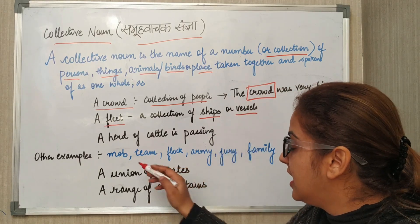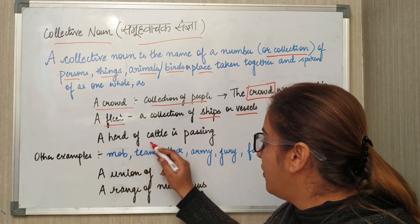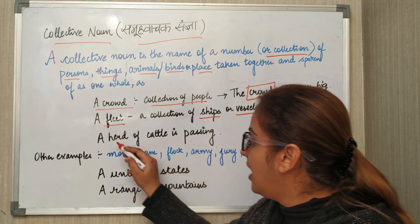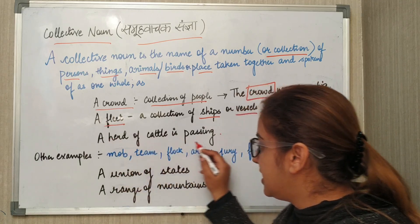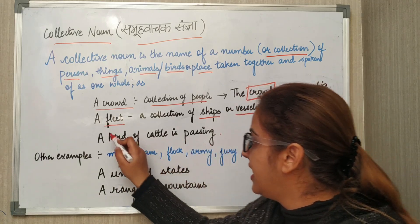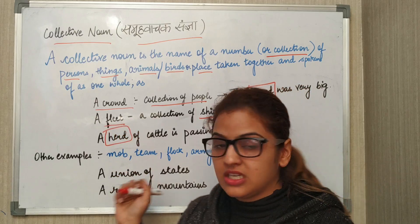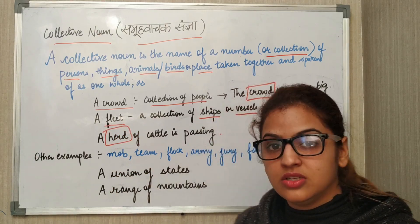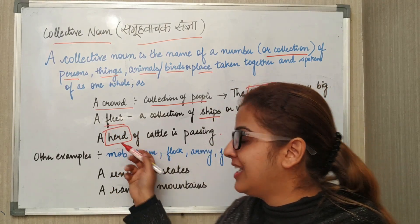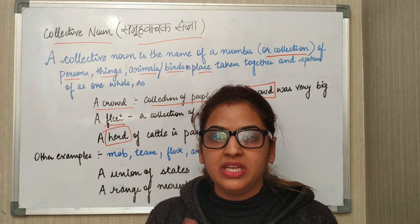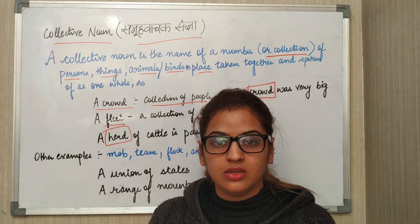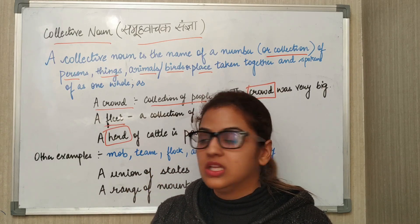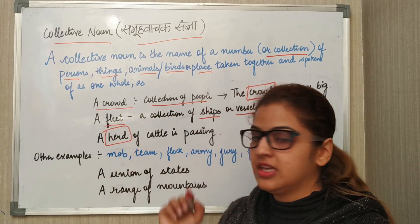Next: 'A herd of cattle is passing.' Now the collective noun here is called herd. When there are more than one, then we will call it a herd.